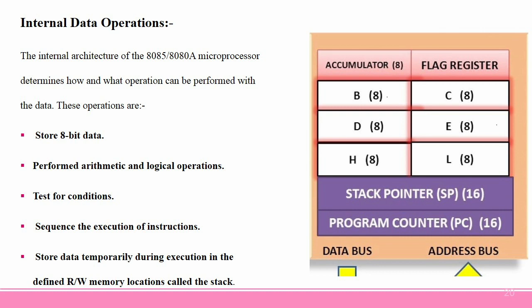Internal data operations and registers: The internal architecture of the 8085 microprocessor determines how and what operations can be performed with the data. These operations include storing 8-bit data using registers, performing arithmetic and logical operations with the ALU, testing conditions using flag registers, sequencing the execution of instructions using control logic, and storing data temporarily during execution in the stack. To perform all these operations, the microprocessor requires registers, an arithmetic and logic unit, control logic, and internal buses.